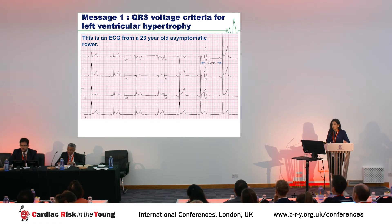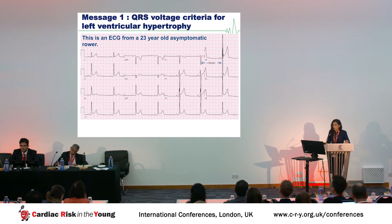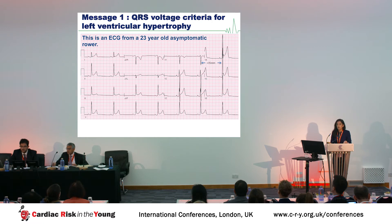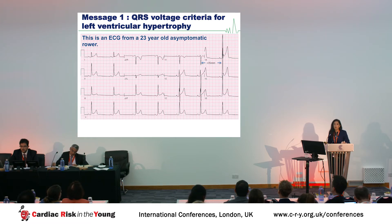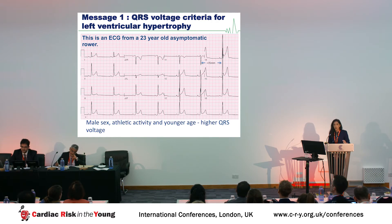Message one is voltage criteria for left ventricular hypertrophy. This is an ECG of a 23-year-old asymptomatic rower with voltage criteria for LVH. Although there are several criteria for LVH, the Sokolow-Lyon voltage criteria is most commonly used — that is the sum of the S-wave in V1 and the R-wave in V5 or V6, whichever is the largest, being more than 3.5 millivolts or more than 35 millimetres. All ECG criteria for LVH correlate poorly with left ventricular wall thickness or LV mass on imaging, and are influenced by male sex, athletic activity, and younger age.